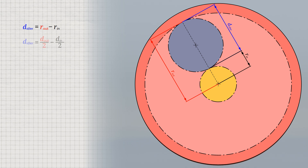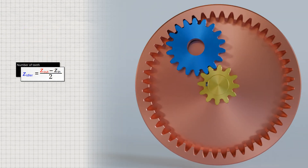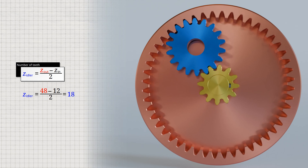If the input and output shafts are to be coaxial on a common axis of rotation, the pitch diameter of the intermediate gear must be equal to the difference between the pitch circle radii of the output and input gear. Since the number of teeth is directly proportional to the pitch diameter, the number of teeth of the idler gear must be half the difference between the number of teeth of the ring gear and that of the input gear. In this case, the red ring gear has 48 teeth and the yellow drive gear has 12 teeth, resulting in 18 teeth for the intermediate gear so that the axes of rotation are aligned.